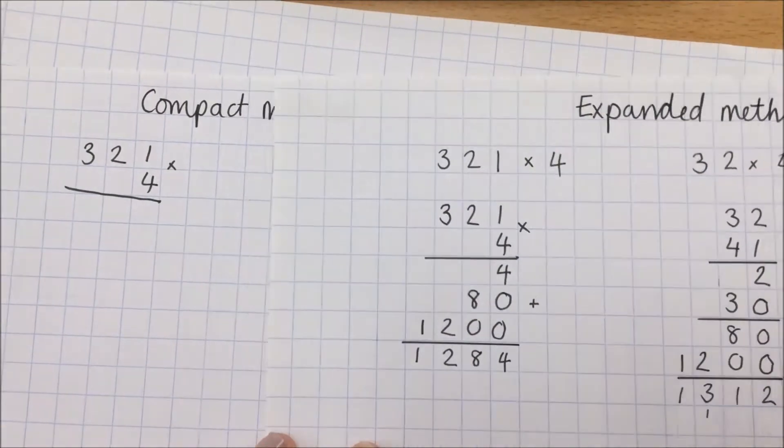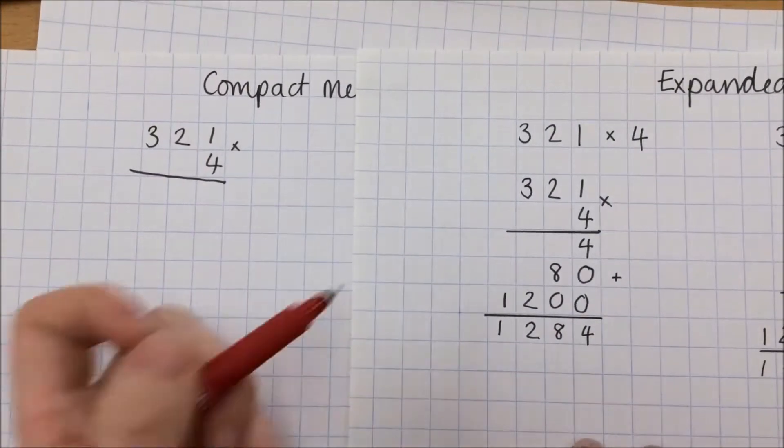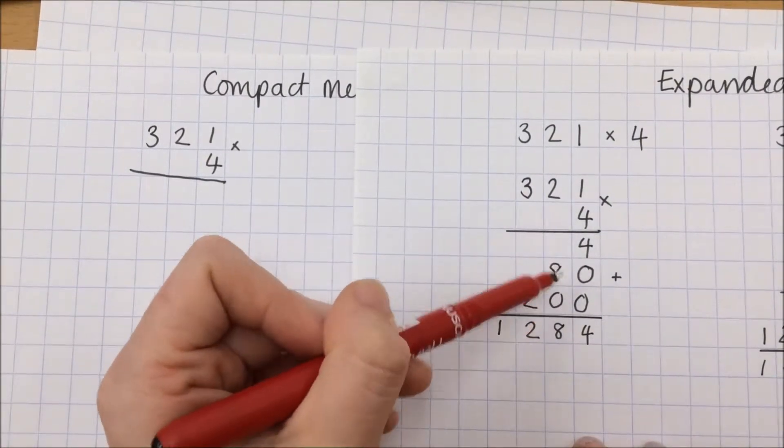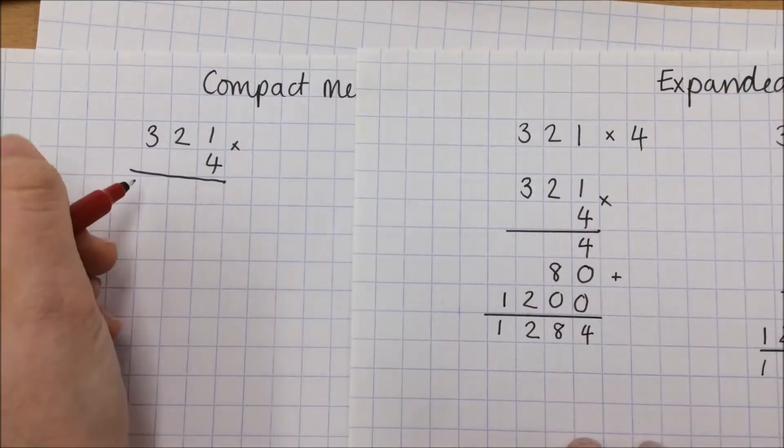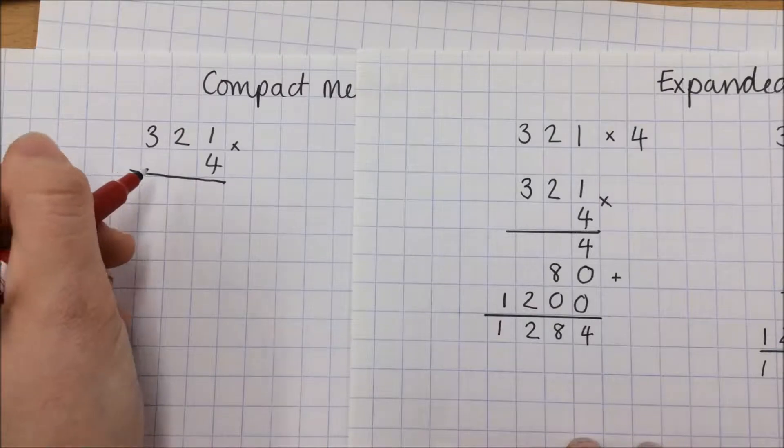is that we're not going to be putting these numbers underneath but in fact we're going to be creating our answer straight away. So 321, oh I didn't use a ruler.